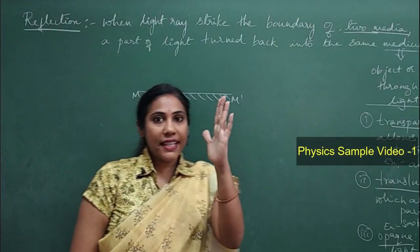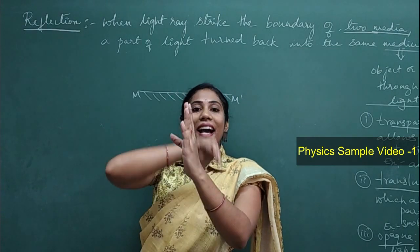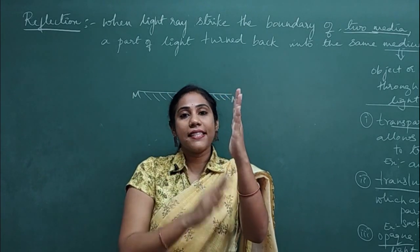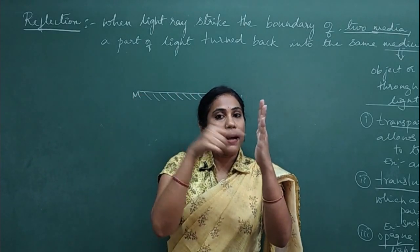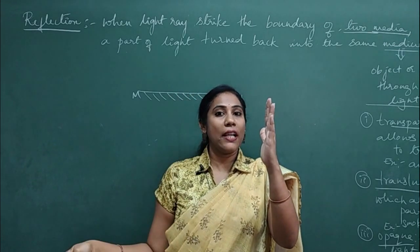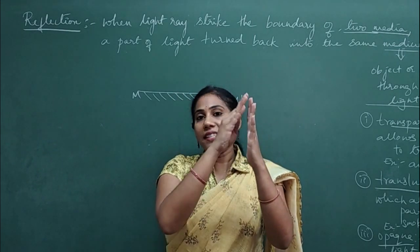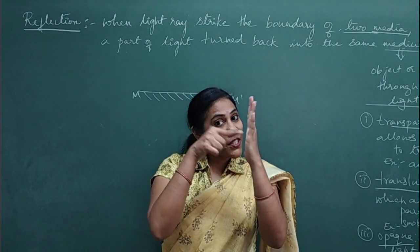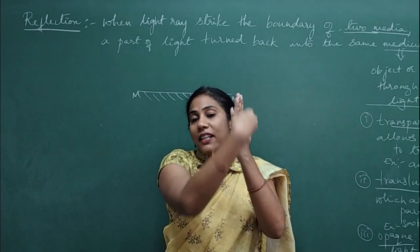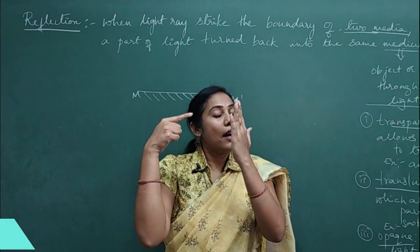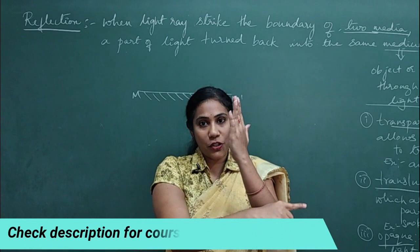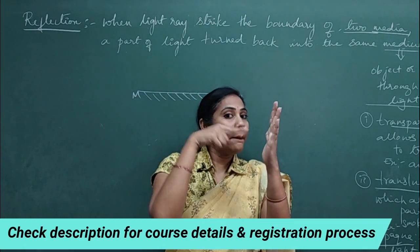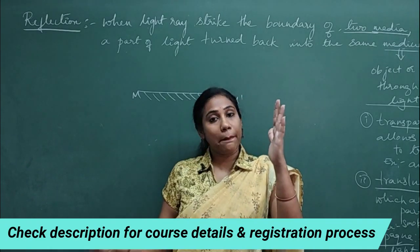Imagine this glass — if I coat the back side with silver, this surface where light rays strike will show better reflection. Such a surface is called a reflecting surface. Light rays will not pass through the mirror because the silver coating does not allow light to pass through. So all the light hitting the mirror gets reflected.